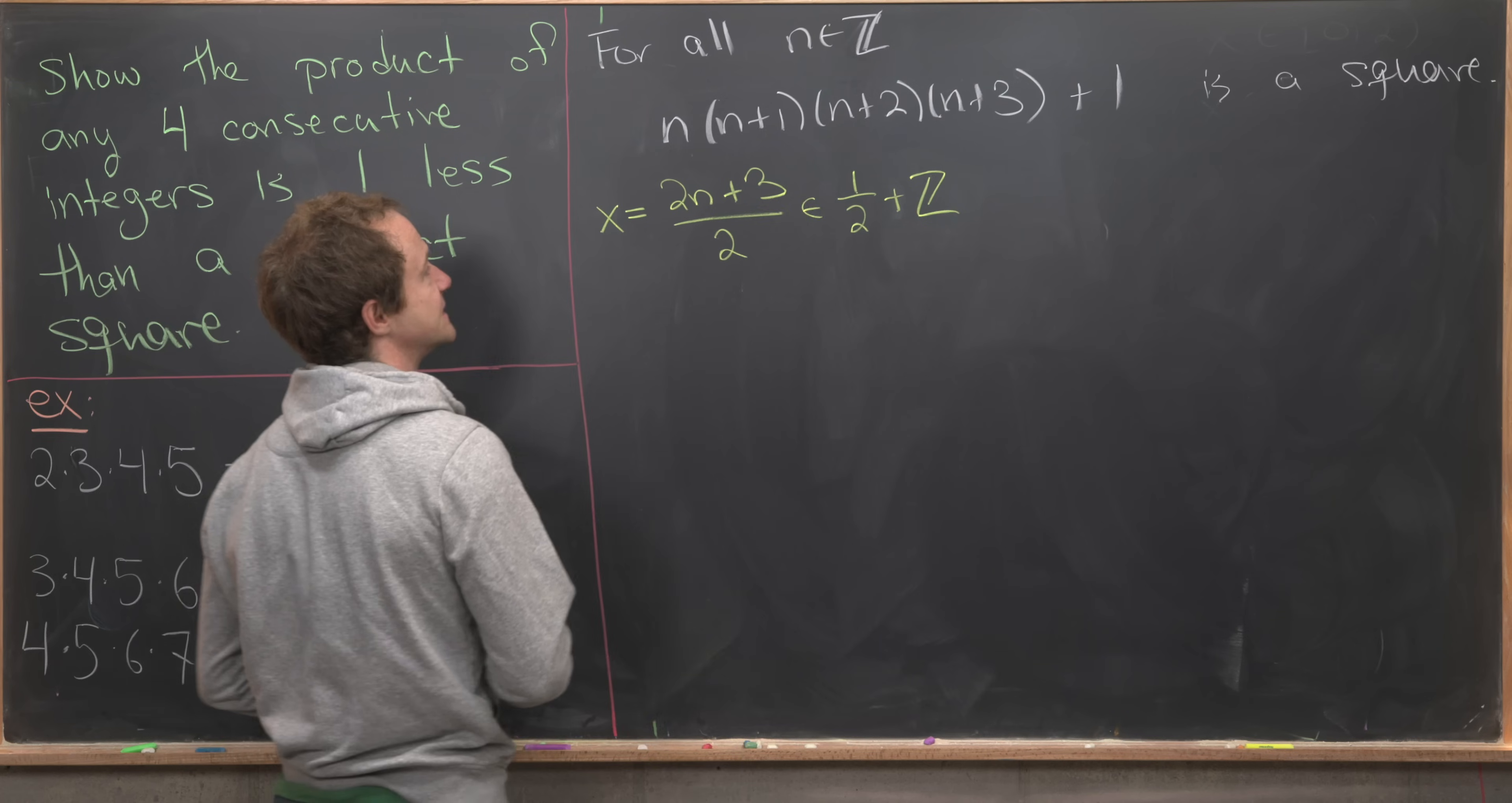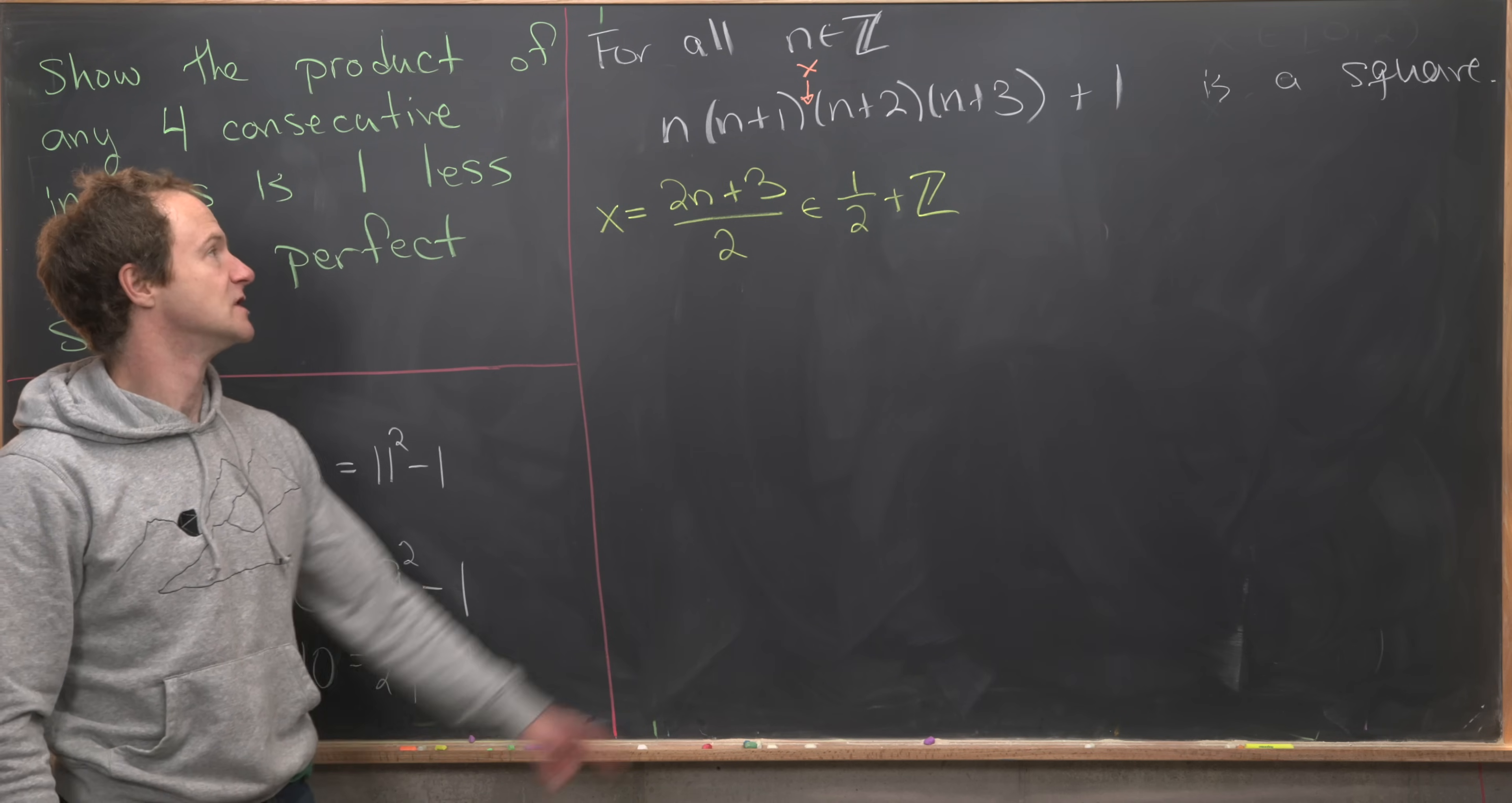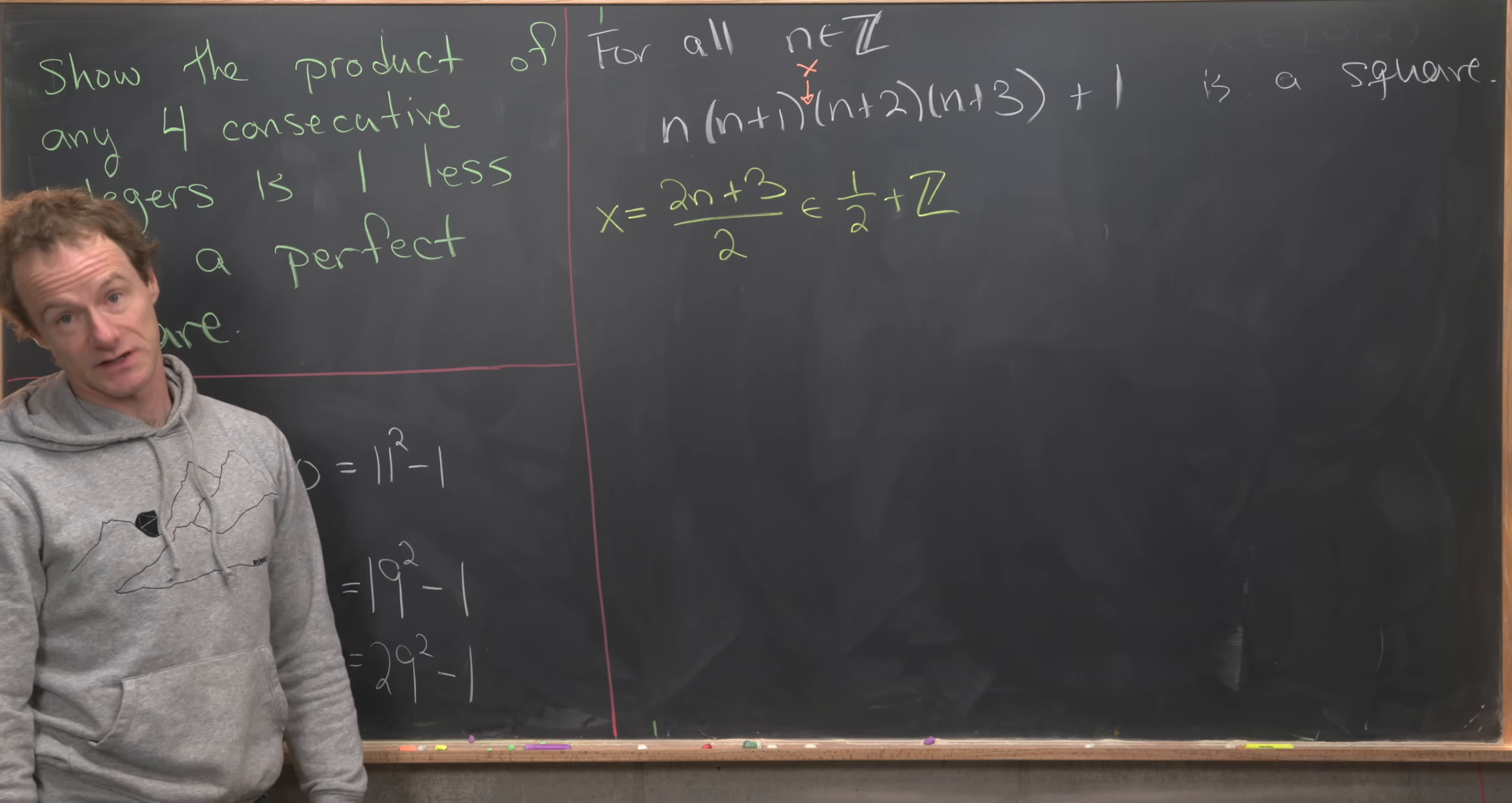Another thing that we want to notice is via this construction, x is exactly between these two middle numbers. So if we take one half away from x, we have n+1. That's not too hard to check. If we add one half to x, we have n+2.